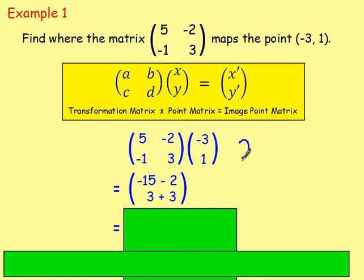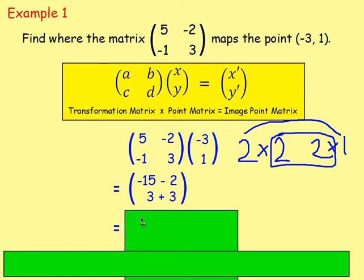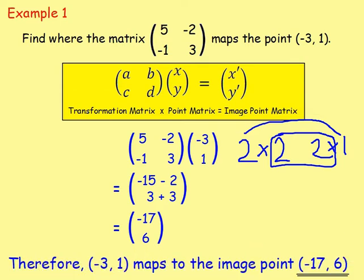The numbers in the middle are the same, which means the resulting matrix will be a 2 by 1. To find the entry in the first row, first column: multiply the first row by the first column — 5 times negative 3 is negative 15, add negative 2 times 1, giving negative 15 minus 2. For the entry in the second row, first column: negative 1 times negative 3 is 3, add 3 times 1, which is 3. That gives us negative 17 and 6. So negative 3, 1 maps to the image point (-17, 6).